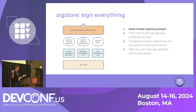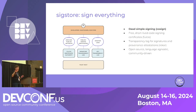Cosign is a CLI tool. In a nutshell, what it allows you to do is run a single command that will sign something — and that will be it. And you can verify that with just a single command as well. You'll see that in action a little bit later during the demo.